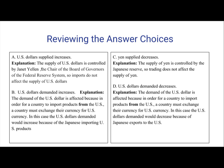D: U.S. dollars demanded decreases. That means that the demand of the U.S. dollar is affected, because in order for a country to import products from the U.S., a country must exchange their currency for U.S. currency. In this case, the U.S. dollars demanded would decrease because of Japanese exports to the U.S. So this would be incorrect.